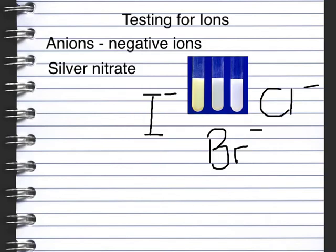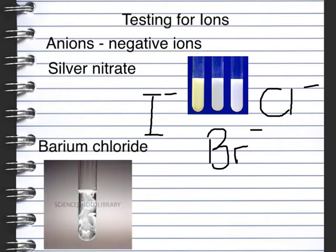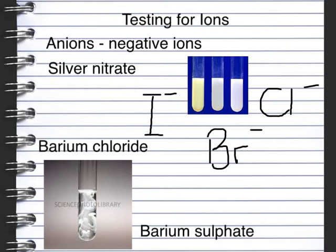Another anion you may have to test for is the sulphate ion. You can do this by adding barium chloride, which produces a precipitate reaction. We get a white precipitate which is barium sulphate, which is insoluble - that's why we get the precipitate.